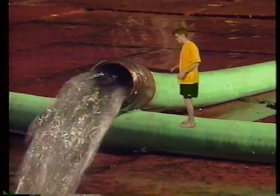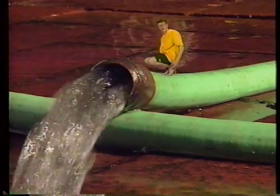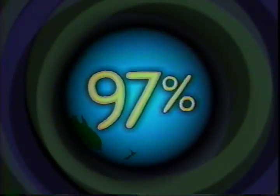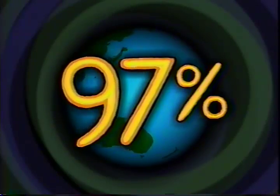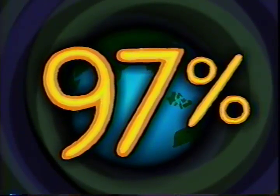There's tons of water on this Earth, so why should we care how much water we waste? Although it looks like the Earth has lots of water, we can only use a very little bit of it. 97% of the Earth's water is in the oceans, which means most of the Earth's water is salty.